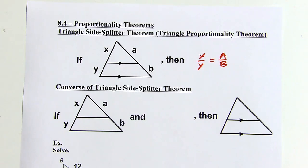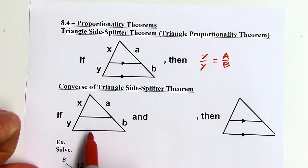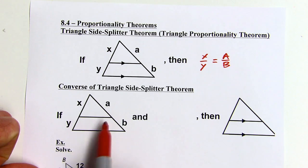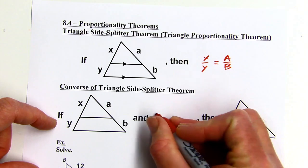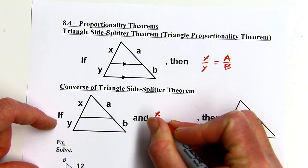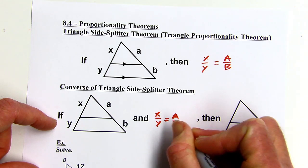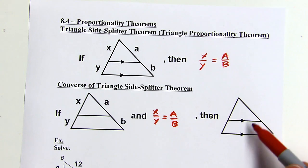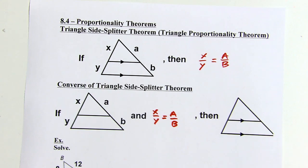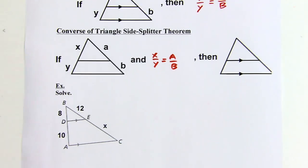There's also a converse of this theorem. If you have a segment inside a triangle where the sides are not marked parallel, but x over y equals a over b — meaning the sides are in proportion — then those two lines must be parallel.